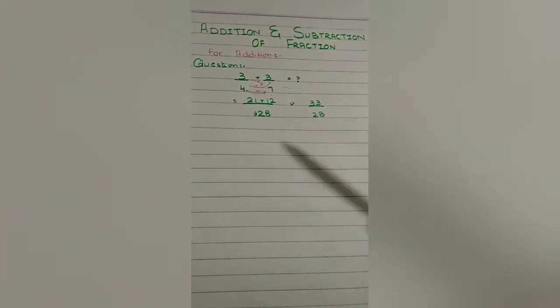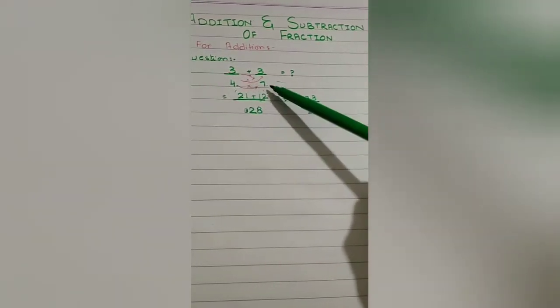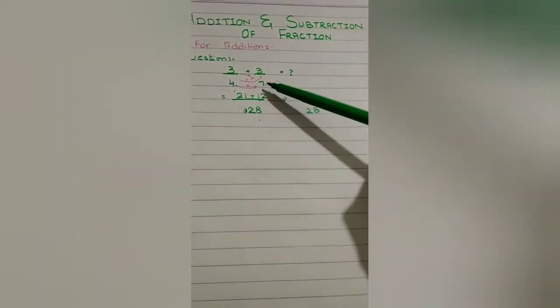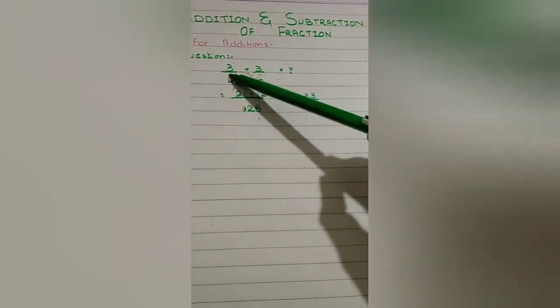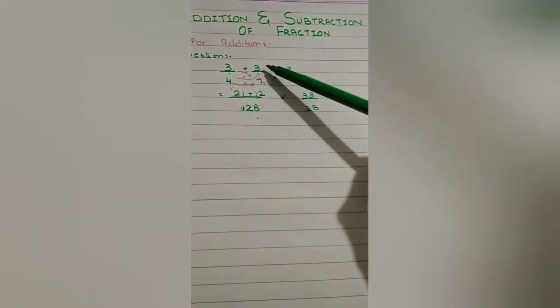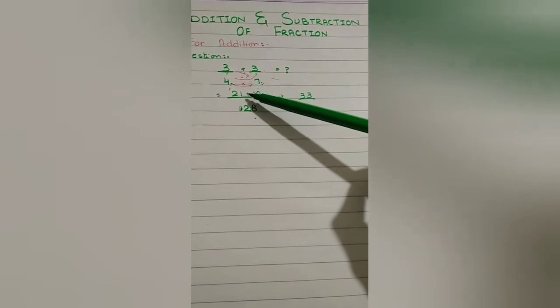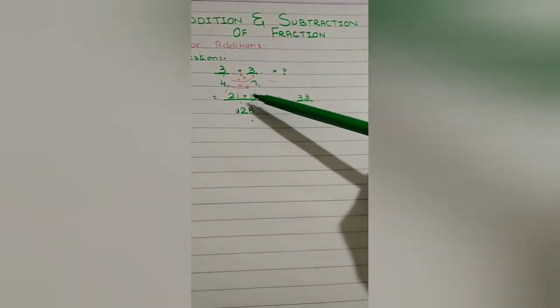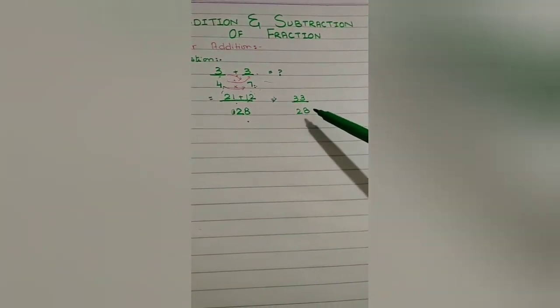Here we have a trick. The denominator values 7 and 4, multiply them, the answer is 28. And here, cross multiply: 7 multiply and 4 multiply. And then we add it, 33 and 28.